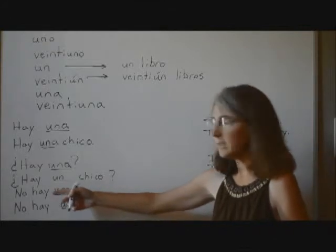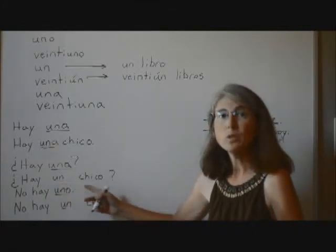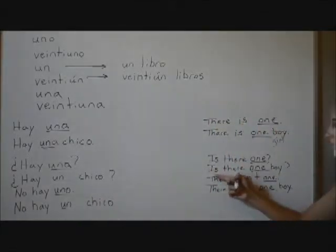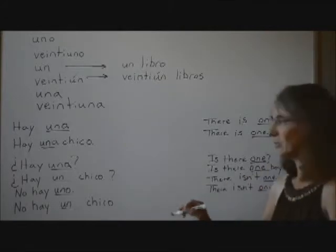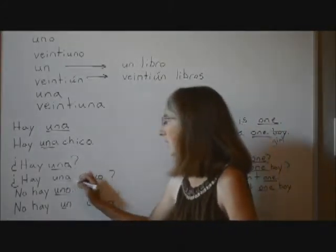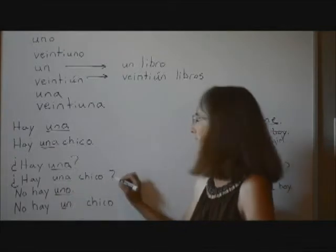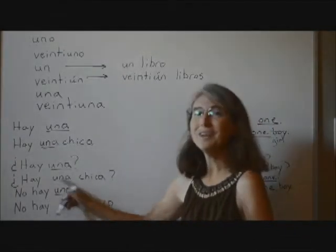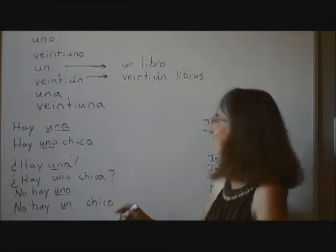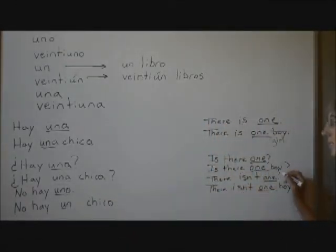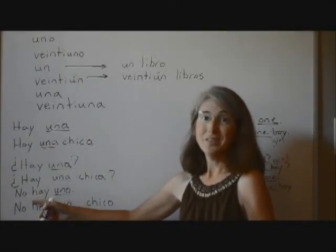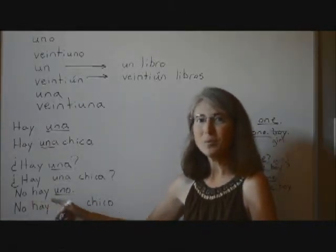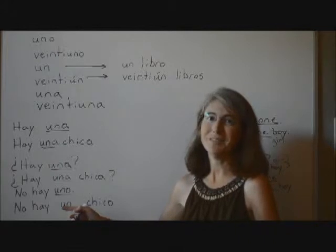But with 'uno,' if 'uno' precedes a masculine noun, we have to drop the O. So if we want to ask, is there one? Hay uno. Is there a noun following that? No. So we can leave the O on there. Hay uno. If we're talking about boys or something unknown, then we can say 'uno.' If we know we're talking about girls, then we have to change the gender of 'uno' to 'una.' Hay una.